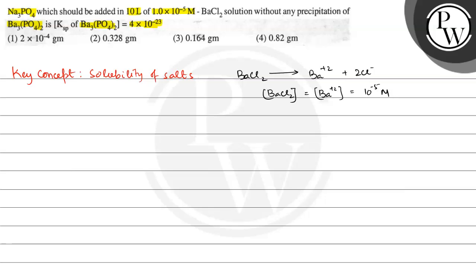The Ksp for Ba3(PO4)2 is equal to 4×10⁻²³. The Ksp expression is: Ksp = [Ba²⁺]³ × [PO₄³⁻]², because Ba3(PO4)2 dissociates into 3 Ba²⁺ ions and 2 PO₄³⁻ ions. This value equals 4×10⁻²³.